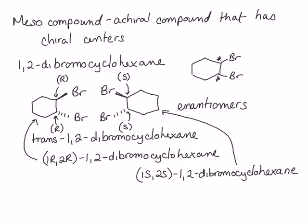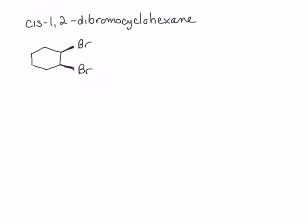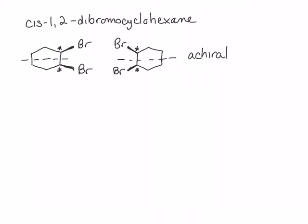Now let's consider cis-1,2-dibromocyclohexane and draw its mirror image. These two mirror images are superimposable, making cis-1,2-dibromocyclohexane achiral. We can also determine that they are achiral because they each contain an internal mirror plane of symmetry. However, even though they're achiral, they both contain two chiral centers. Take a moment to pause the video and determine the absolute stereochemistry at each of the chiral centers in cis-1,2-dibromocyclohexane.